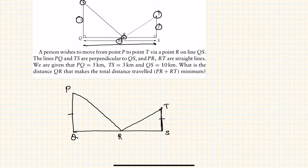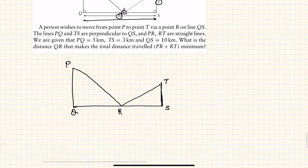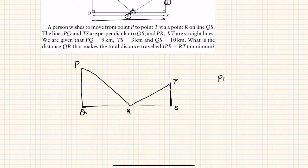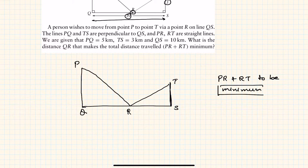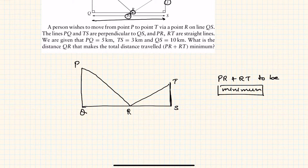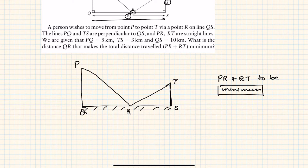We are given to find the distance PR plus RT, to be minimum. The minimum distance between two points is a straight line. So the technique is: imagine line QS to be a mirror and reflect point T on this mirror to get point T'. Then PR and RT' will form a straight line.